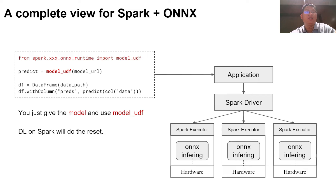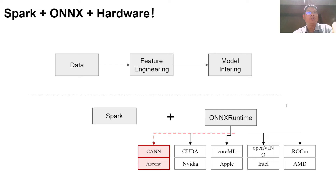What each framework needs to do is to implement the corresponding logic according to the actual situation of the framework. Then, as shown in the right picture, Spark will help you execute the ONNX inference in the Spark Executor, and Spark will help gather the final results. In this way, users can easily complete ONNX inference on big data.